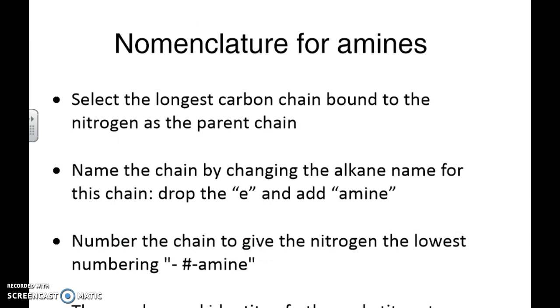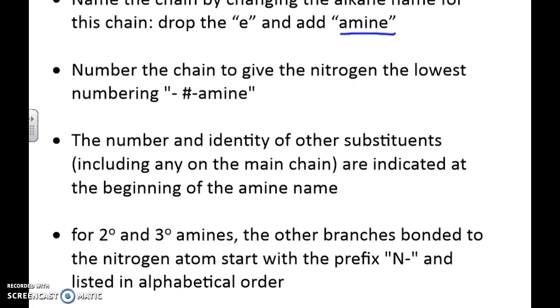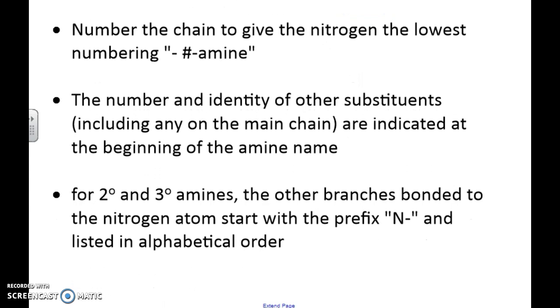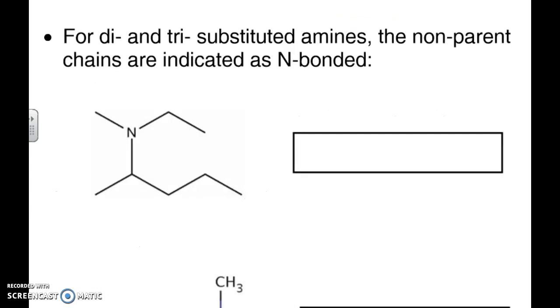So now if it's a side group, we've seen how it works. If it's the main group, what we're going to do is change the ending to amine. Now, if you just have it as one amine, it's fairly straightforward. It's when you've got a secondary and tertiary amino or amine group that becomes a little bit harder. We're going to signify these with N dashes. A little confusing, but let's do an example right here.